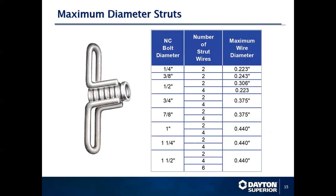Ferrule diameters typically include quarter, three-eighths, half, three-quarter, seven-eighths, one inch, inch and a quarter, and inch and a half. Based on the size of the ferrule, you can determine how many wire struts can be welded to it. Some anchors cannot be manufactured with a three-eighths or quarter-inch ferrule because there is not enough material within the ferrule to accept the weld.